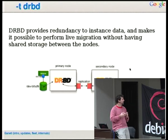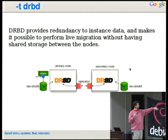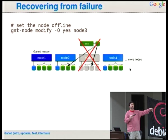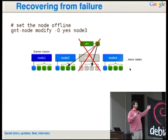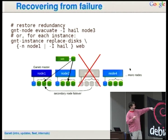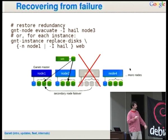DRBD provides replication between nodes: an instance lives on a primary node with local storage, data is replicated over the network to a secondary node. For failure recovery — say node 3 dies with an instance on it — if we caught it early we could live migrate out. Otherwise, we offline the node, failover the instance which reboots it over its secondary storage, then replace disks by recreating the DRBD mirror over the network. Now the cluster is independent of node 3 and our instance is failure-tolerant again.